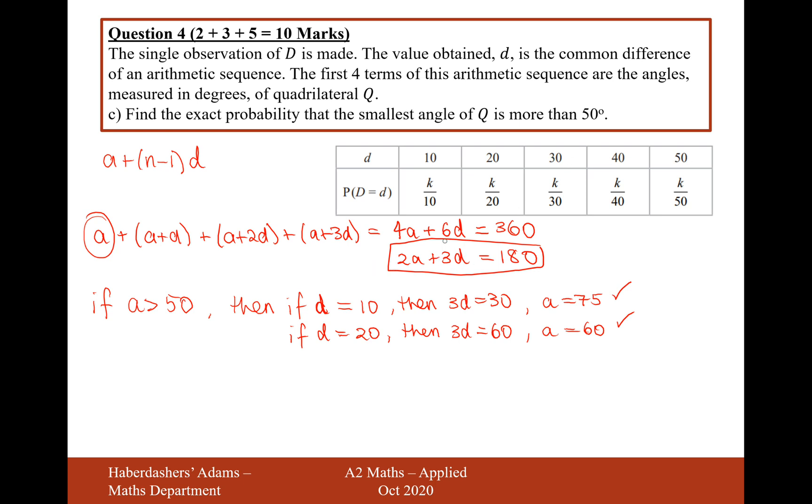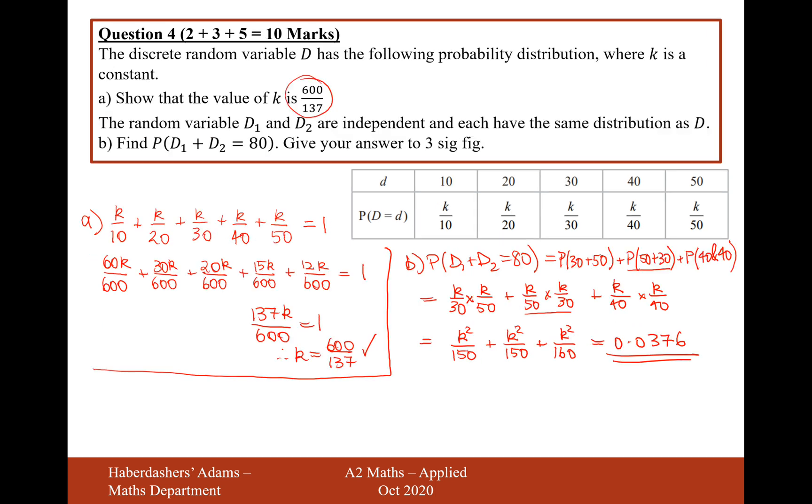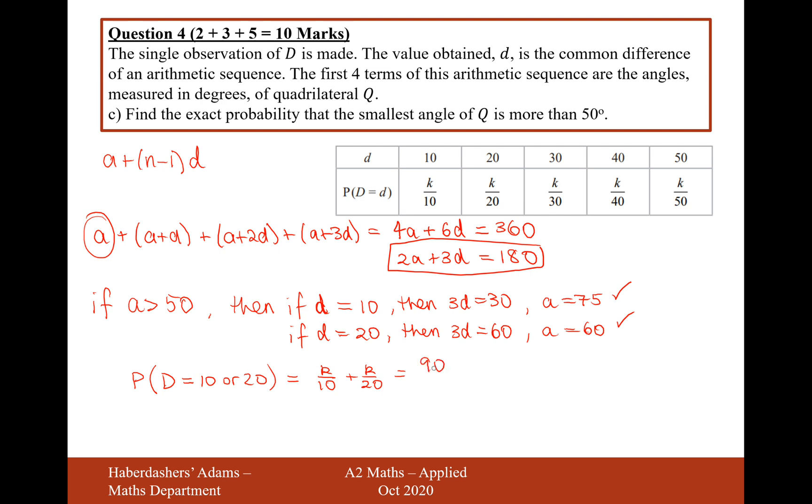So what we basically want to now do is find that the probability of d is equal to 10 or 20. So that's going to be k over 10, add k over 20, which is going to be, let's just grab the calculator for this one here. We've got k as the value 600 over 137. So when we do that on the calculator, we get 90 over 137. So there we are. That's the answer for this question here. Question C was basically a long, complicated version of saying, what's the probability that d is equal to 10 or 20? So there we are. That's the answer for question 4, a total of 10 marks for that question.